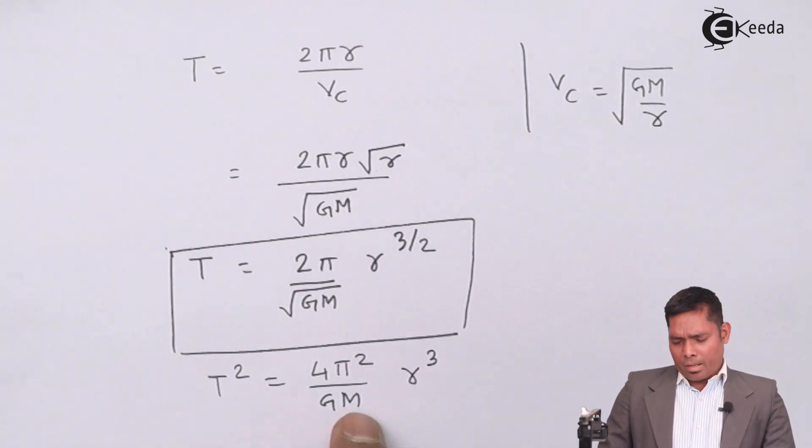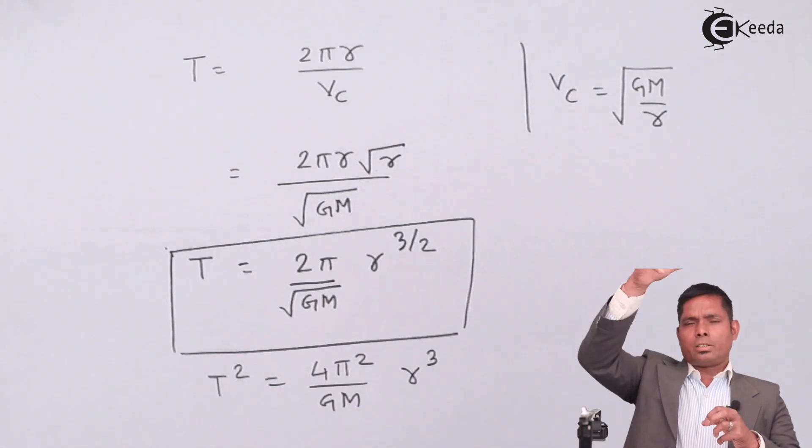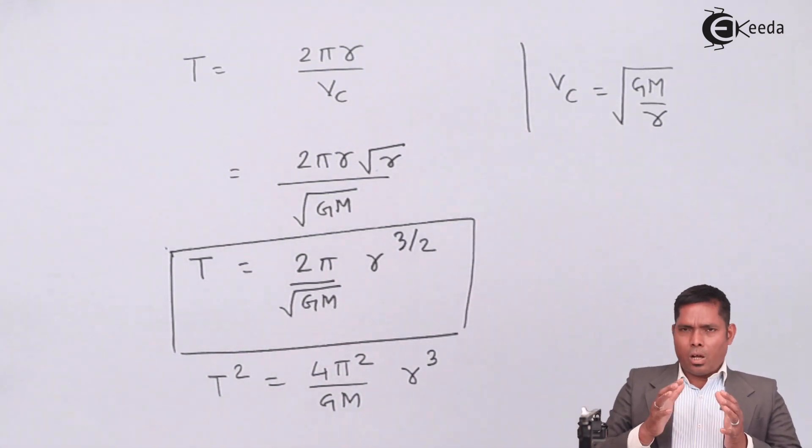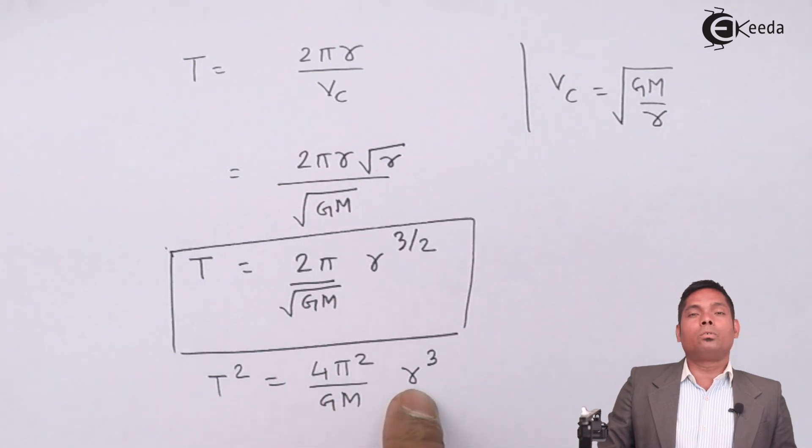But for a given planet, this m is fixed. So for a given planet and we have different satellites in different orbits, how the time period and r are related, it is only depending on the cube. The square of the time period is proportional to cube of the orbital radius.